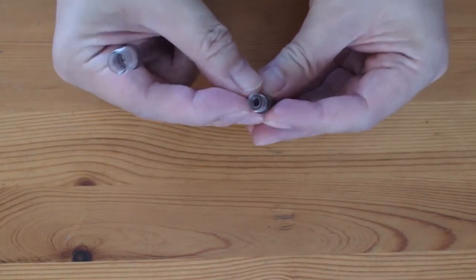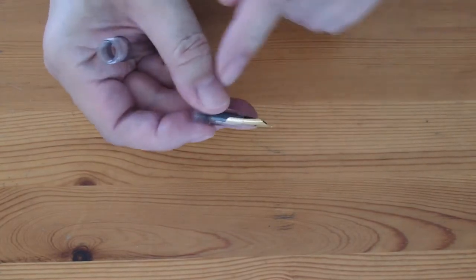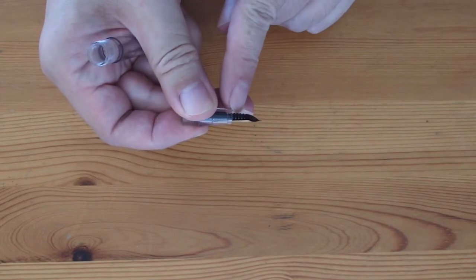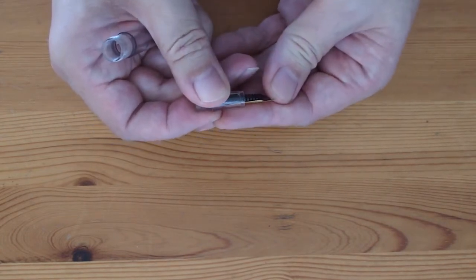The ink enters the feed through an opening at its back, through the ink channel and towards the nib. The ink forms a film between the nib and the feed, ready to apply ink to the paper.